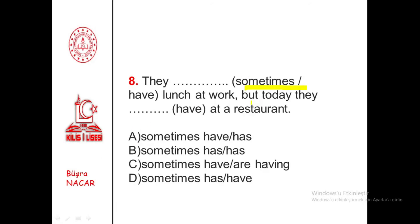Sometimes — since it says 'sometimes,' we use Simple Present. Let's also pay attention to the subject: 'they' takes 'have,' not 'has,' so options B and D are eliminated. For the second part: normally they sometimes eat at home, but today they are eating at a restaurant. Since it refers to the present moment, we use Present Continuous. The subject 'they' takes 'are,' so: are having.